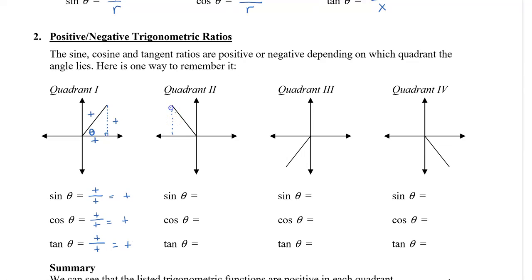In the second quadrant, the x value is negative and the y value is positive, while the radius remains positive. So sine theta — opposite divided by hypotenuse — is positive divided by positive, which equals positive. Cosine is the adjacent, which is negative, divided by positive, giving a negative value. Tan theta is opposite divided by adjacent — positive divided by negative — which equals negative.